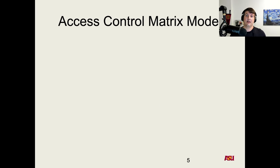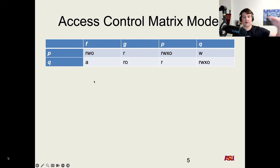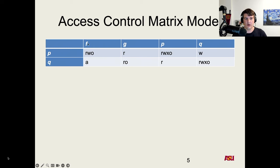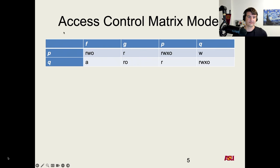Let's look at the matrix with abbreviated rights: R, W, X, A, O (read, write, execute, append, own). Process P has read, write, and own on F; read on G; read, write, execute, and own on P; and just write on Q. Process Q has append only on F; read and own on G; read on P; and read, write, execute, and own on Q.